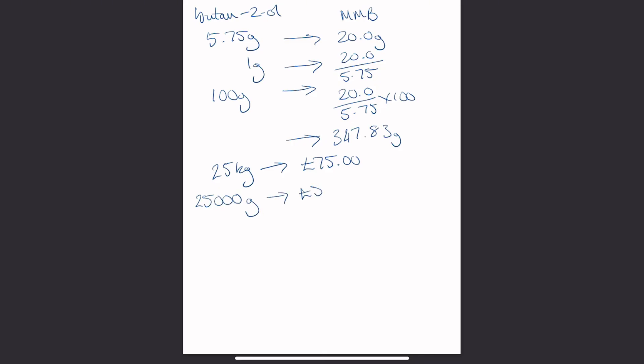So 20 divided by 5.75 times by 100 is 347.83 grams. So then if we go to the cost, 25 kilos was 75 pounds. We need to change into grams so times that by 1000. We want 347.83 grams, so we scale down to 1 gram, 75 over 25,000, and then we scale up to 347.83. That's 1 pound 4 pence.